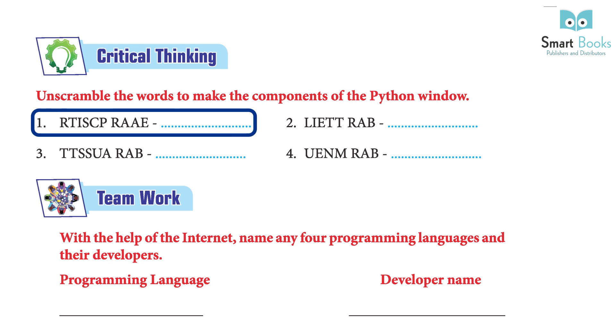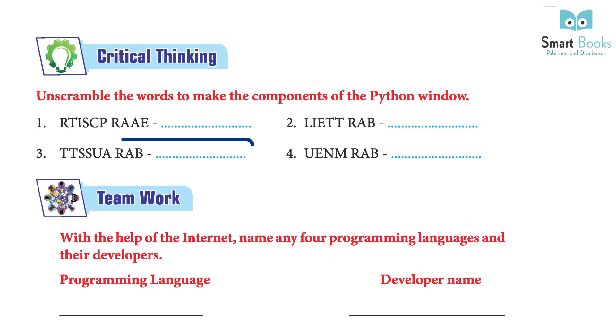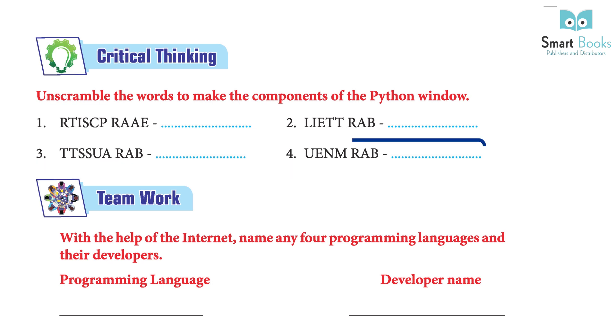Critical Thinking — unscramble the word to make the components of the Python window. Answers: 1. Script area. 2. Title bar. 3. Status bar. 4. Menu bar.